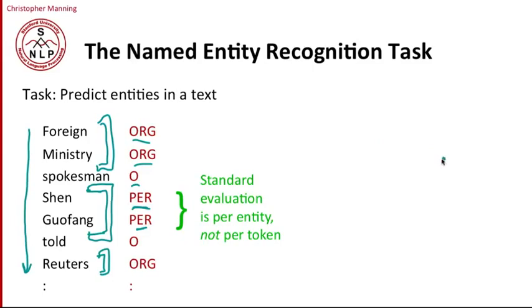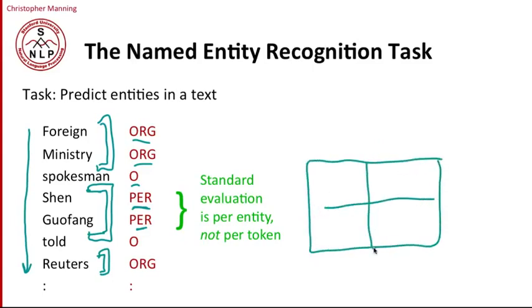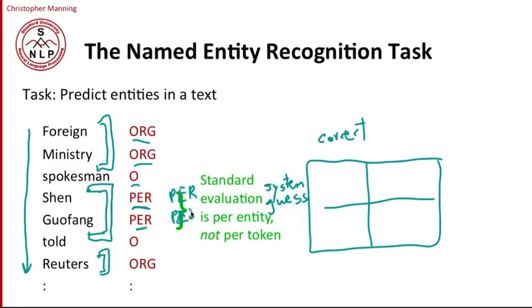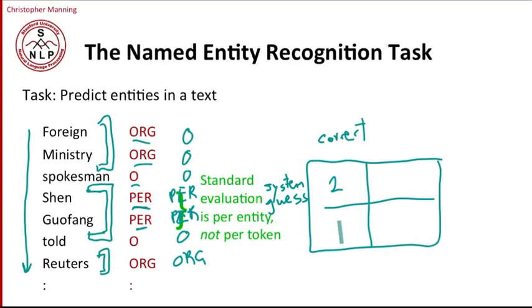When we're working out our two-by-two contingency table of true positives and so on — and here's our system guess — what we're going to do is do it at the level of entities. In this data, there are three entities. We could imagine that our system identified one as a person name and identified another as an organization name, but missed one. So we'd say there are two true positives and one false negative out of the three entities.